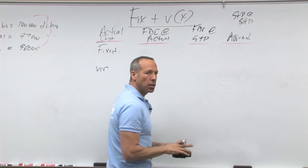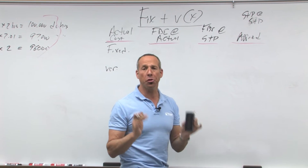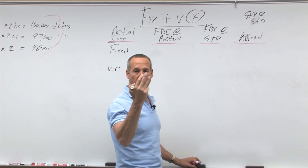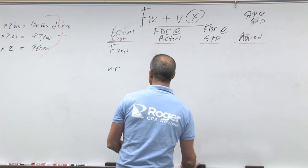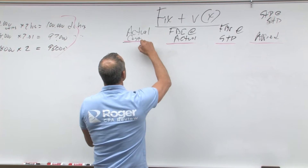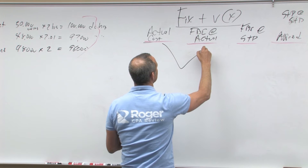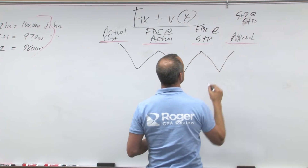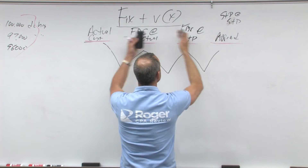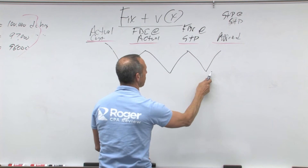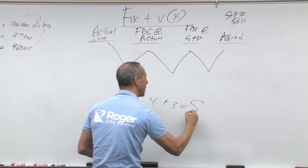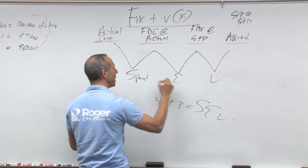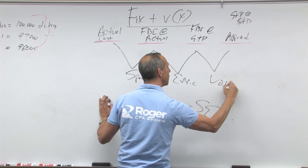Let me show you the three-variance approach. We've got actual cost to flexible budget at actual, flexible budget at actual to flexible budget at standard, and flexible budget at standard to what got applied. Four differences gives you three variances. That's why four numbers gives three variances — spending, efficiency, and volume. Spending is going to be the first variance, efficiency is the second, and volume is the third.